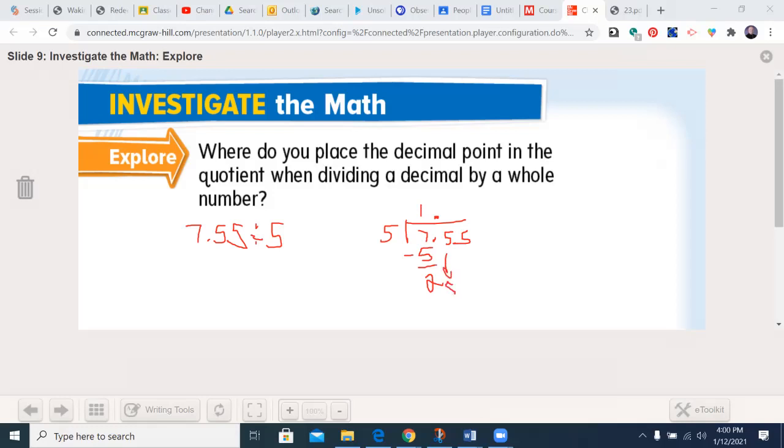It goes in there 5 times. 5 times 5 is 25. I bring down the 5. It goes in one time. 1 times 5 is 5. You get 1.51. So if you're using the standard algorithm, it's easy just to write the decimal directly above where it is in your dividend. So that's one way to look at this.